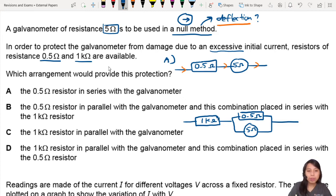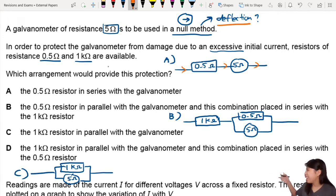Let's check C. Running out of space, I'll draw it here. The 1kΩ resistor in parallel with the galvanometer. So 1kΩ like this, galvanometer 5Ω down there. This one is a bit sketchy. We have a problem with this setup. You know why? Because if you look at that over there,